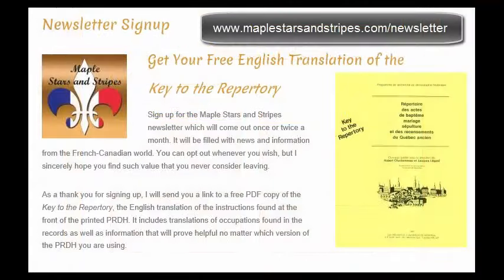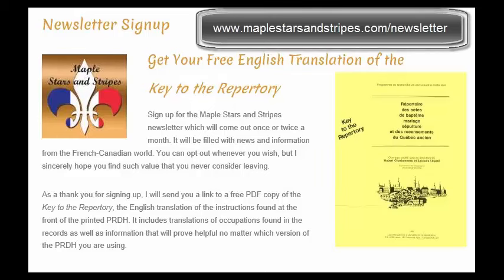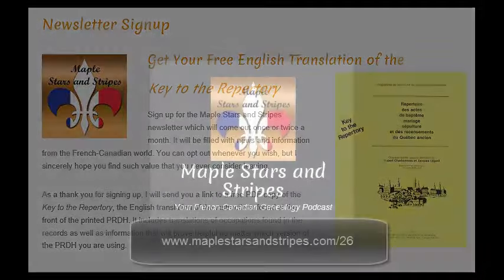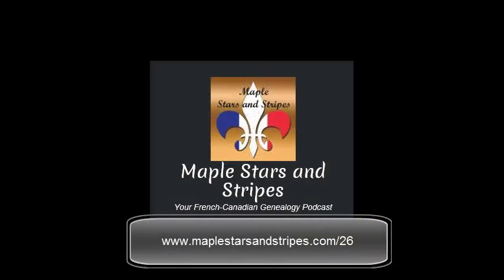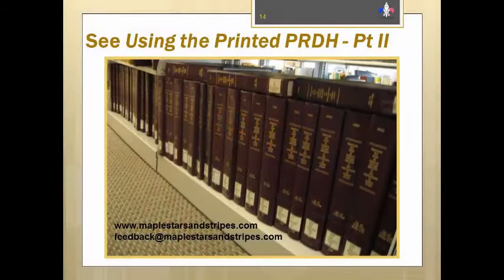Don't forget to go to maplestarsandstripes.com/newsletter to get your copy of the Key to the Repertory. Between the key and these videos, the printed PRDH should no longer be a mystery to you. To learn more about all three PRDH formats, go to my podcast and show notes for the PRDH episode at maplestarsandstripes.com/26. Now that you understand how the volumes are arranged, part 2 will demonstrate how to use the indexes to easily locate the information you need. Please join us for part 2.